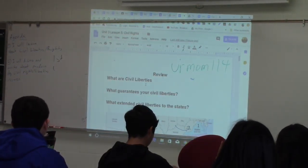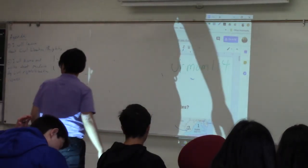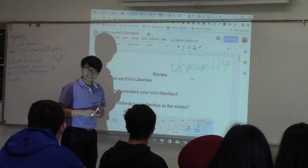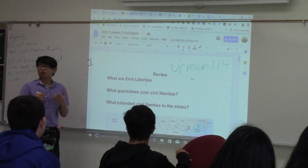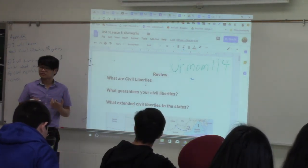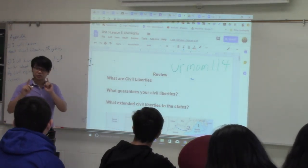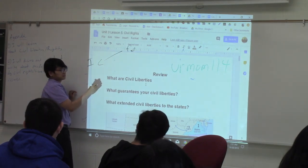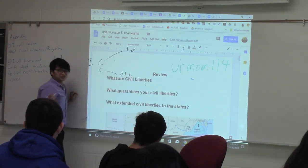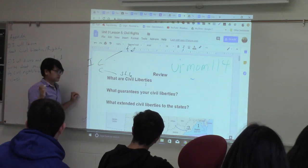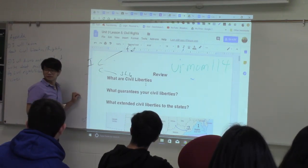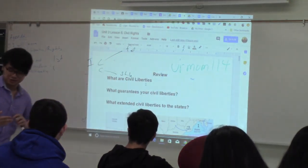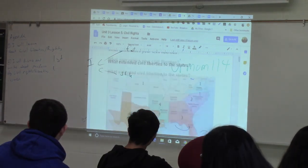Alright guys, so last time we were talking about civil liberties. Civil liberties are your constitutional guarantees that protect you, an individual, from the government. Where can you find these guarantees? In the Bill of Rights. It used to be that these guarantees only protected you from the federal government, but now it also covers state governments — most of them — because of selective incorporation, which is enabled by the 14th Amendment's Due Process Clause.